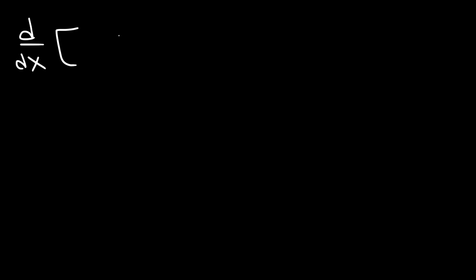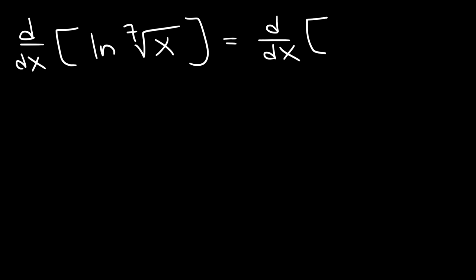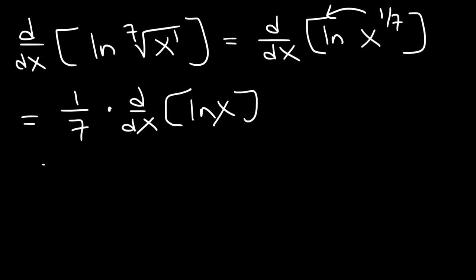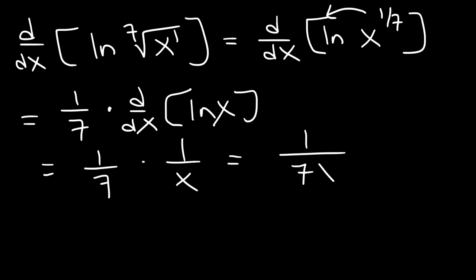Now go ahead and differentiate the natural log of the 7th root of x. The best thing to do here is to rewrite it — rewrite the radical as a rational exponent, so this is x raised to the 1 over 7. Then we can take the exponent and move it to the front: this is 1 over 7 times the derivative of the natural log of x, which is 1 over 7 times 1 over x. So the final answer is 1 over 7x.